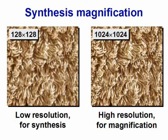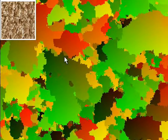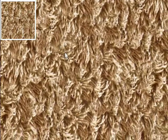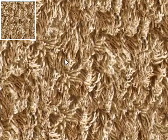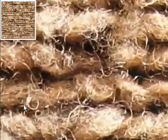We introduce synthesis magnification, in which we generate the texture at low resolution and use a synthesized coordinate as a map to sample a higher resolution exemplar. This magnification has a fill rate of over 50 million pixels per second, including mip mapping.